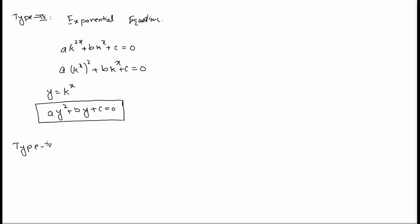The other type that can be reduced to a quadratic form is equations of the form (x + a)(x + b)(x + c)(x + d) = k. We multiply the terms, rearrange, and substitute — similar to the previous types — to obtain a quadratic form. This type will be explained in detail with the help of an example.